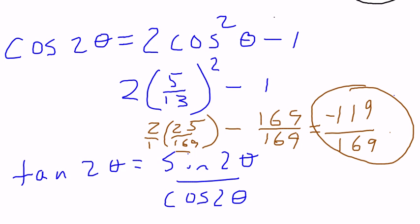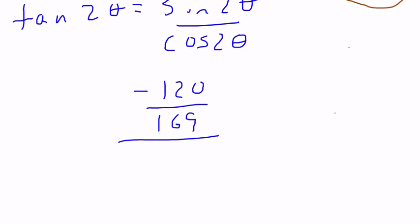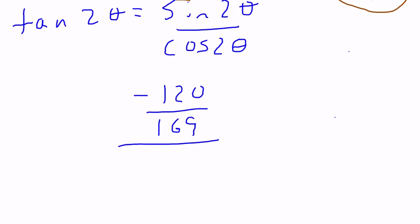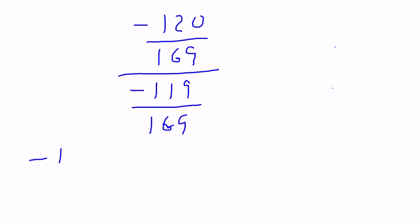Like I said earlier, to find the tangent, I'm just going to take the sine value, which was negative 120 over 169, divided by the cosine, which is negative 119 over 169. So I have 2 fractions that I'm dividing. I have negative 120 over 169, divided by negative 119 over 169.